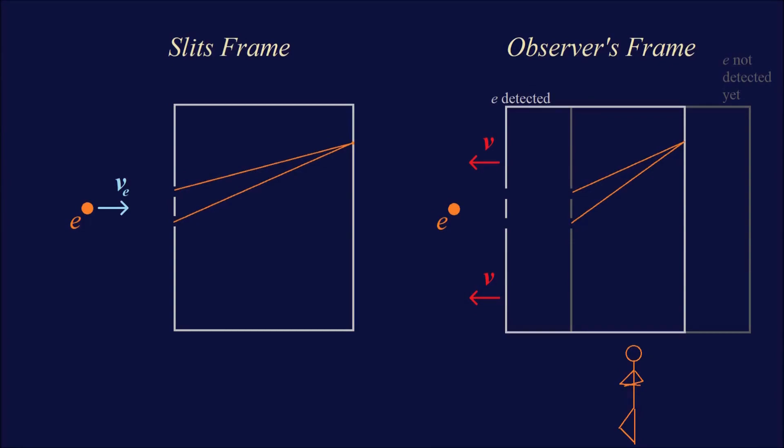To address this question, we will approach the experiment using relativity. On the left, we have the reference frame of the two-slit device with the screen, while on the right, we have the reference frame of the observer. In the observer's frame, the two slits move with a speed v to the left, towards the particles, such as electrons.